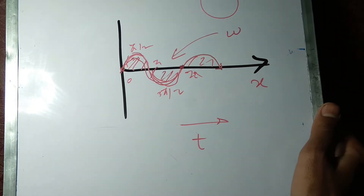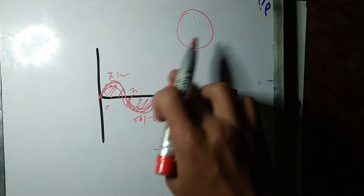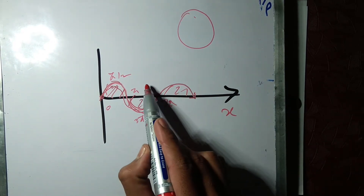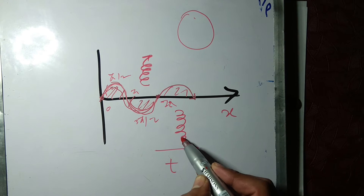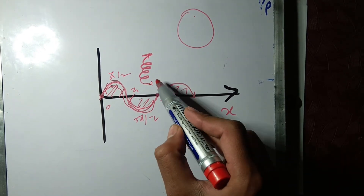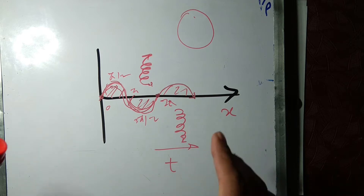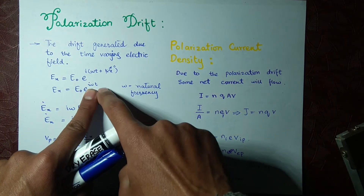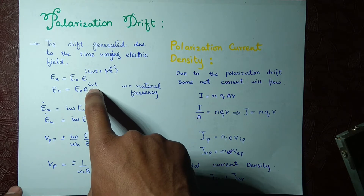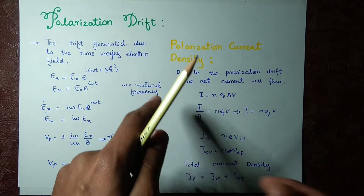Looking at the previous diagram for the gyration: for a positive charge there is gyration in one direction and for a negative charge in the other direction. The positive charge moves downward for a positive electric field — that was the case for the gyration. Note that this omega is not omega_C; omega_C is the cyclotron frequency, while this omega is the natural frequency of oscillation of the electric field.